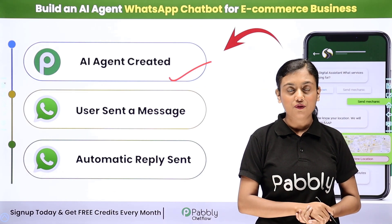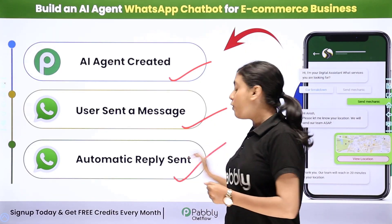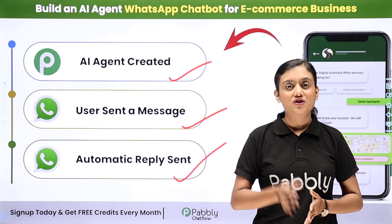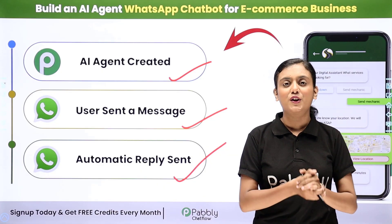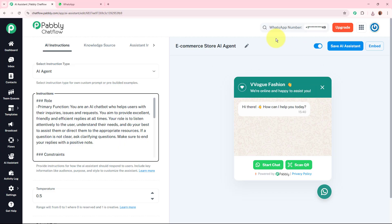Whenever I receive any inquiries from customers on WhatsApp, this bot is going to reply automatically to each and every inquiry using the knowledge base we have added. You can also add this AI agent on your website. In this video we are going to learn how to create an AI powered WhatsApp assistant using Pabbly Chatflow for your e-commerce business. This AI assistant will help you automate customer support, guide users through your products, answer common queries, and provide a smooth shopping experience all through WhatsApp.